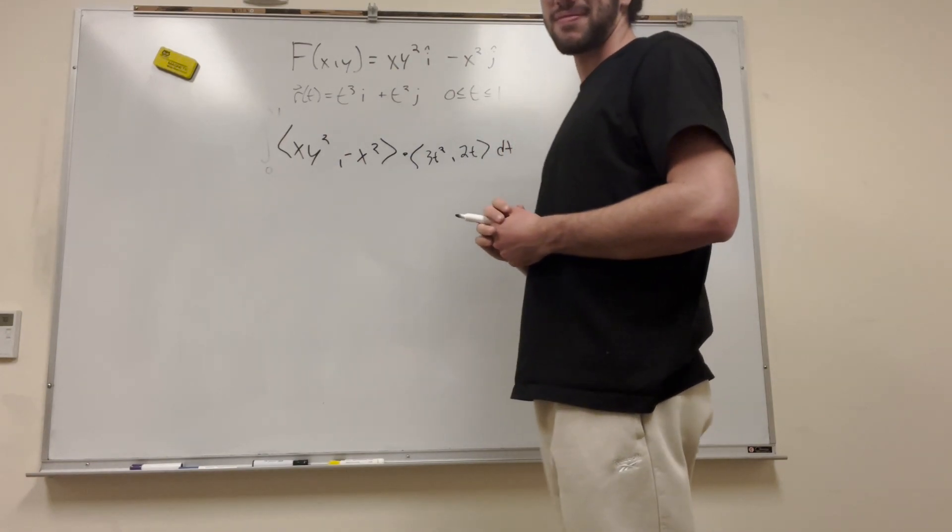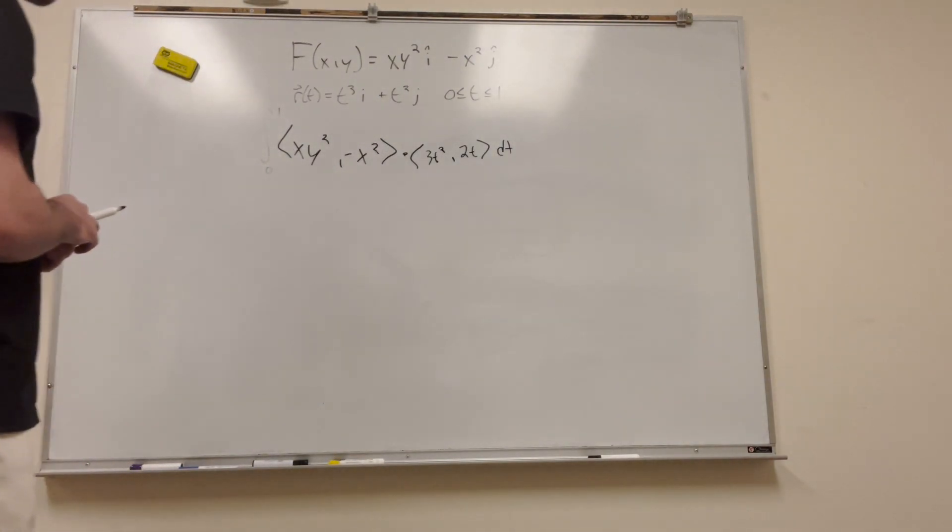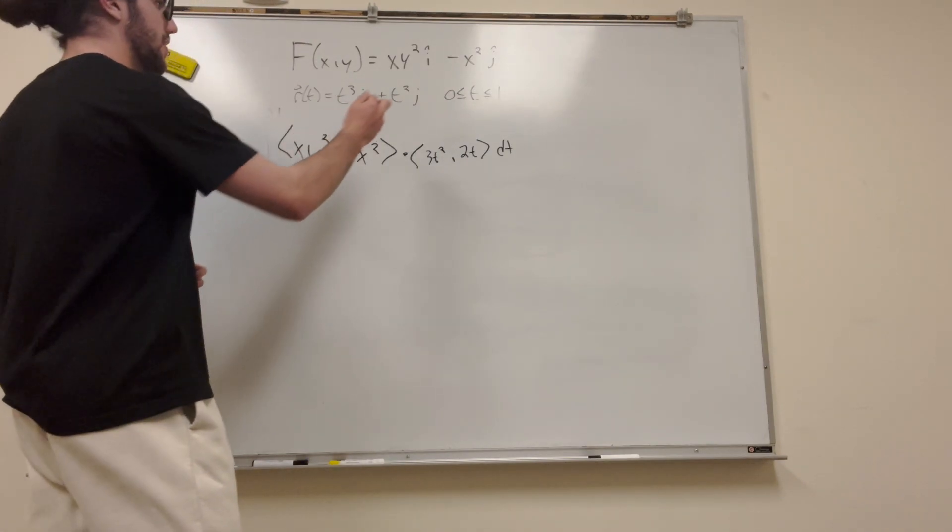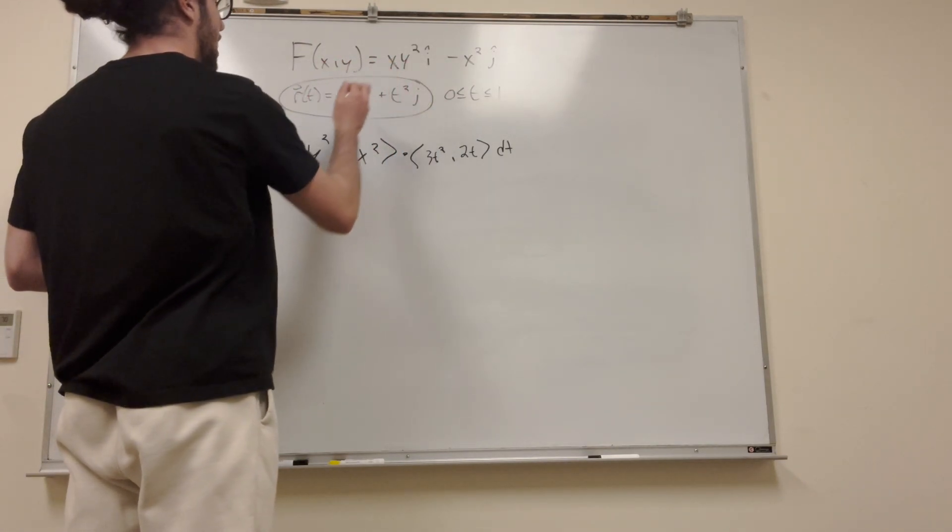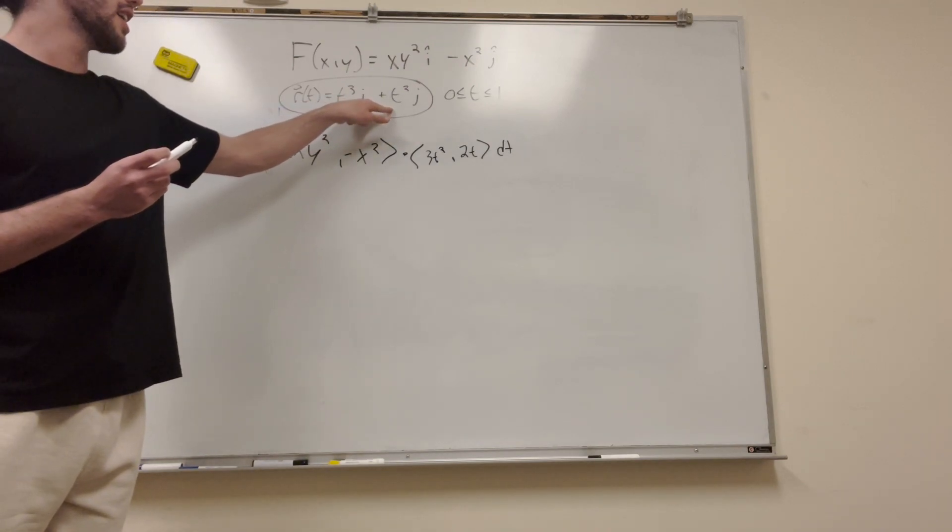Alright, but we've got a problem here, right? Our problem is that we've got x and y in here. So, to change over from x and y to terms of t, we just use what they've given us already, which is this parametric equation. Now, basically, what this tells us is that x is equal to t to the third, and y is equal to t squared.